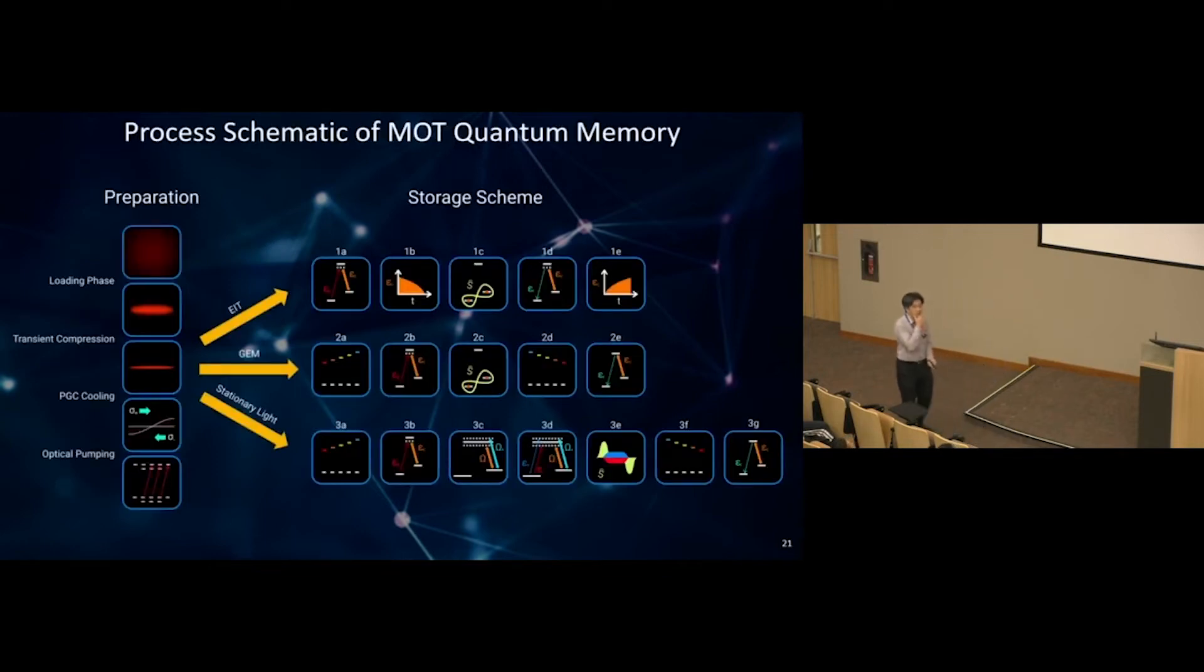Here's the process schematic of a magneto-optical trap based quantum memory. First, we need atoms and load them into our magneto-optical trap. Then compress the trap as densely as possible. In this case, we're building a cigar trap shaped like a cigar. Then implement polarization cooling and optical pumping. Once done, you can use it for EIT-based quantum memory, gradient echo-based quantum memory, or create stationary light. For us, we're concentrating on the loading and compression process to pack more atoms into our magneto-optical trap.